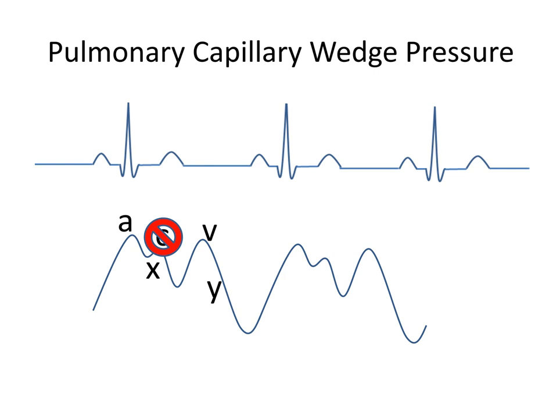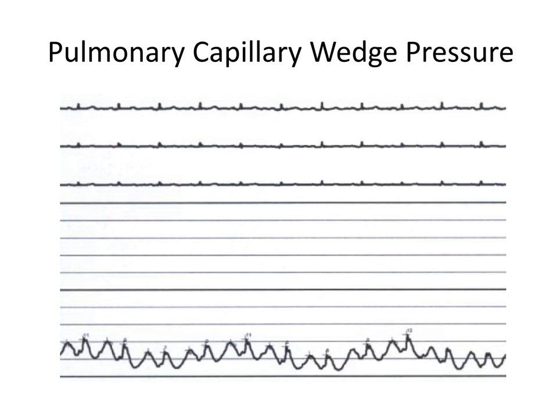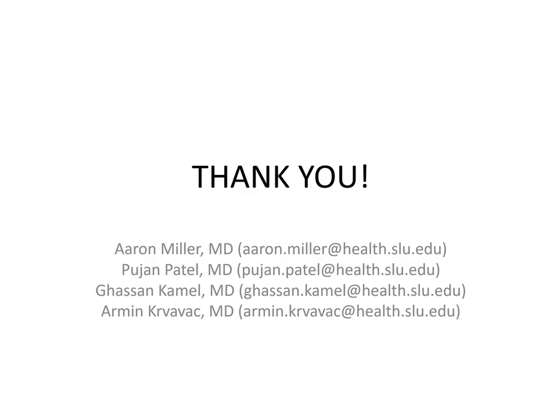So which wave represents your pulmonary capillary wedge pressure? First, identify the A waves, which correspond to the end of the QRS complex on the rhythm strip. Second, select the wave or waves that correspond to end expiration. I have placed two arrows on waves that correspond to the end of the QRS complex and are at the end of expiration. The A wave pressure is essentially equivalent to the pulmonary capillary wedge pressure, so those pressures would be averaged and reported as the pulmonary capillary wedge pressure. Thank you for listening — don't hesitate to contact us by email with any questions or comments.